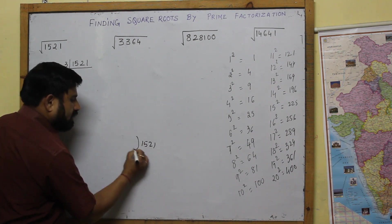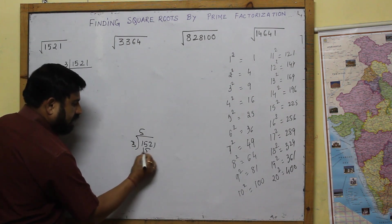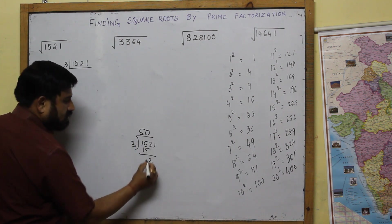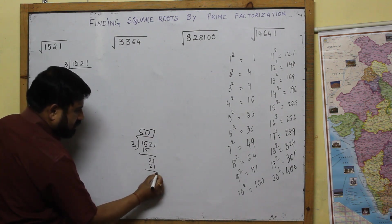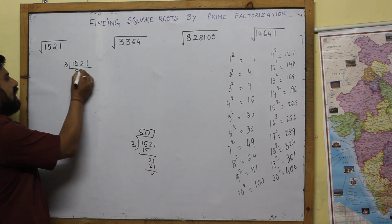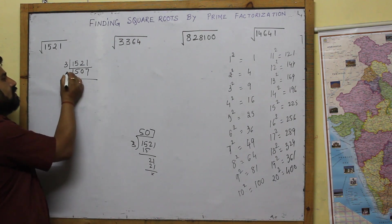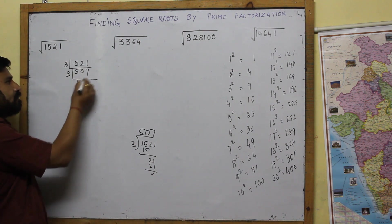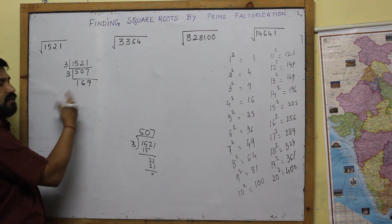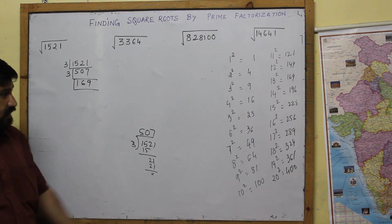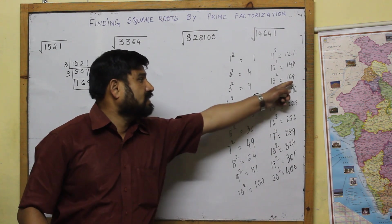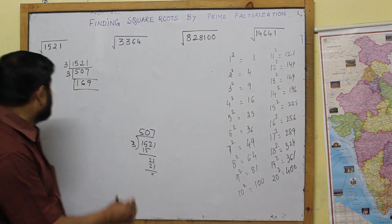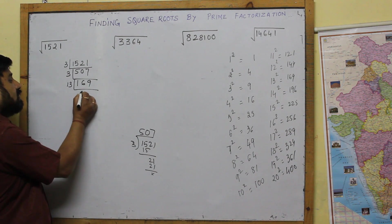So 1 comes down. So 7 divided by 3 is 1. So you can do it like this. So 507. You can divide by 3. It was 3. So this is 169. Where 13 square is 169. So take 13.